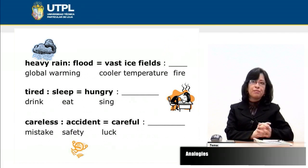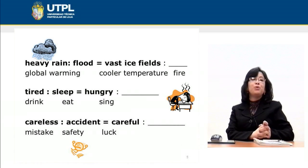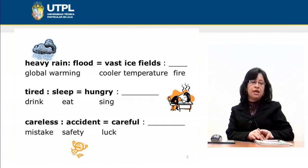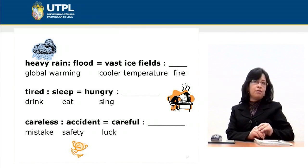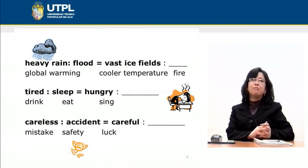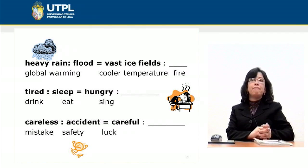Let's analyze another category: cause and effect. We have 'heavy rain' and 'flood.' We need to look for the same relationship in the second pair. In the second case, we have 'vast ice fields.' What would be the effect? The options are fire, cooler temperature, and global warming. Since flood is the effect of heavy rain, we need the effect of vast ice fields — which is 'cooler temperature.'